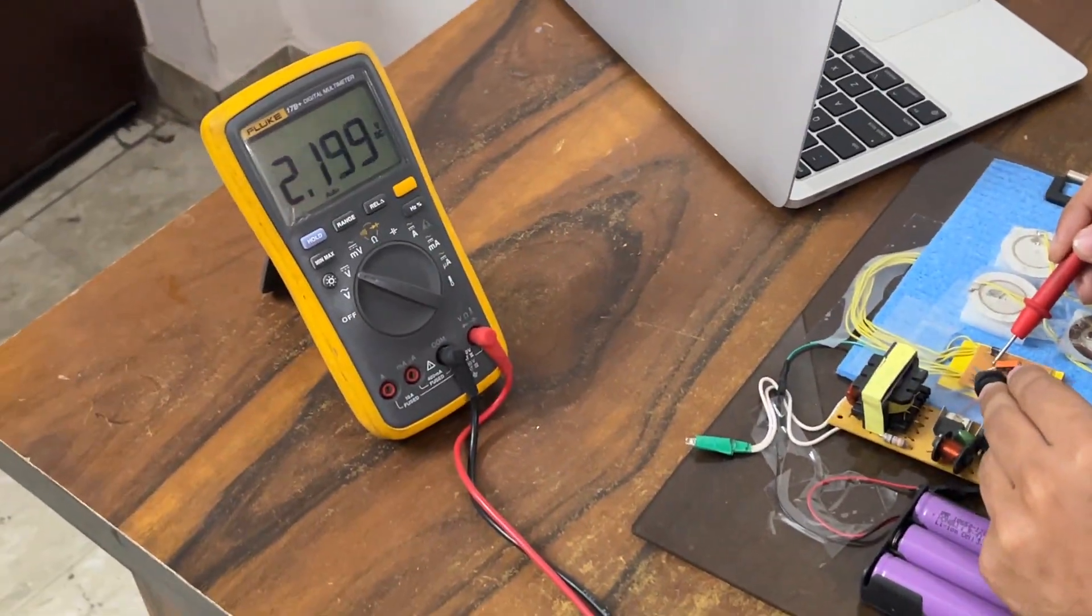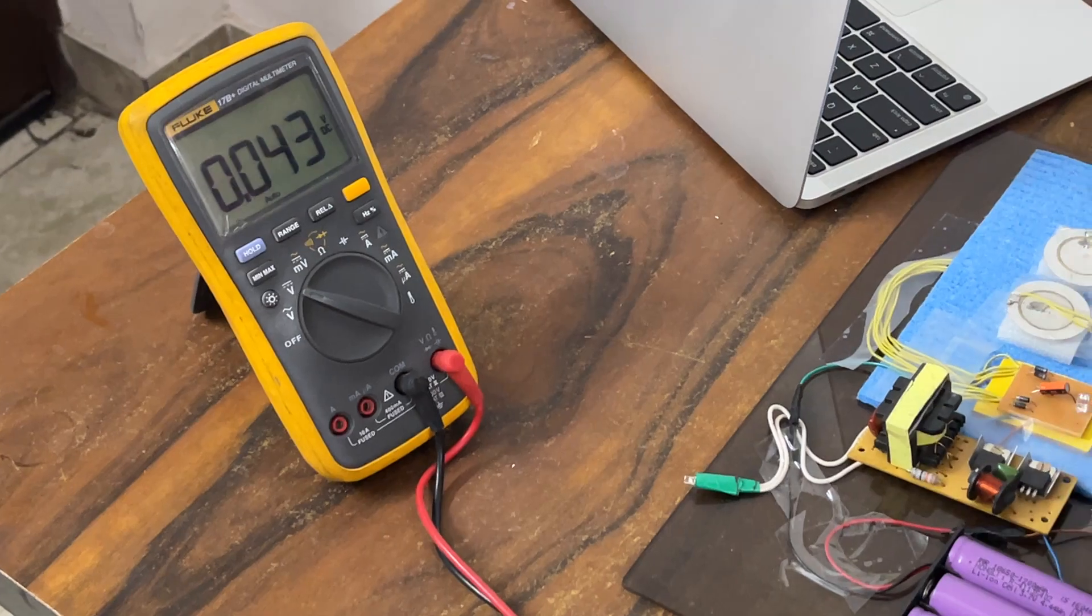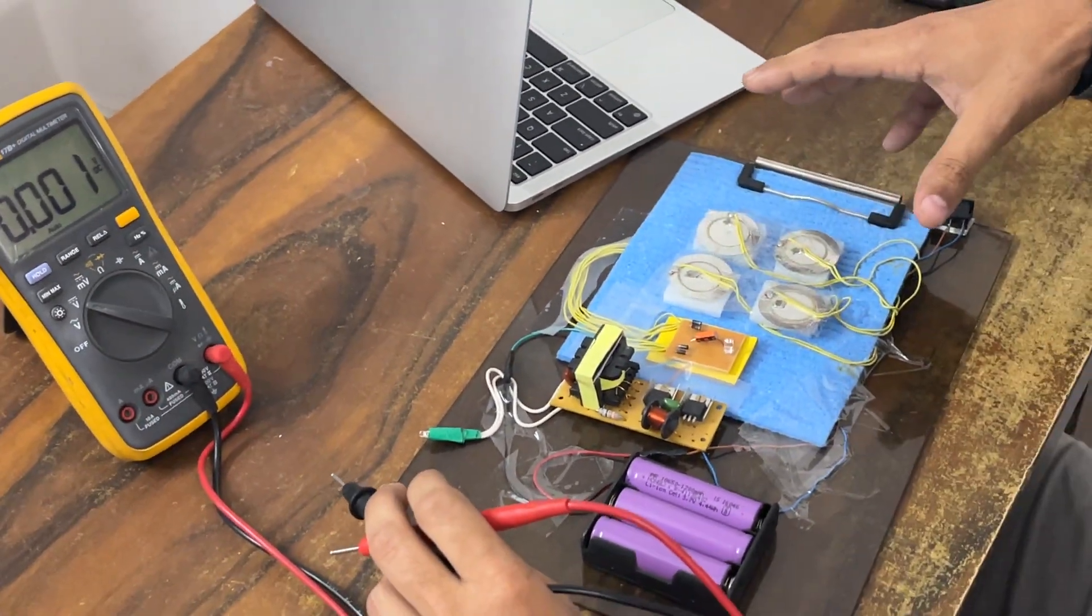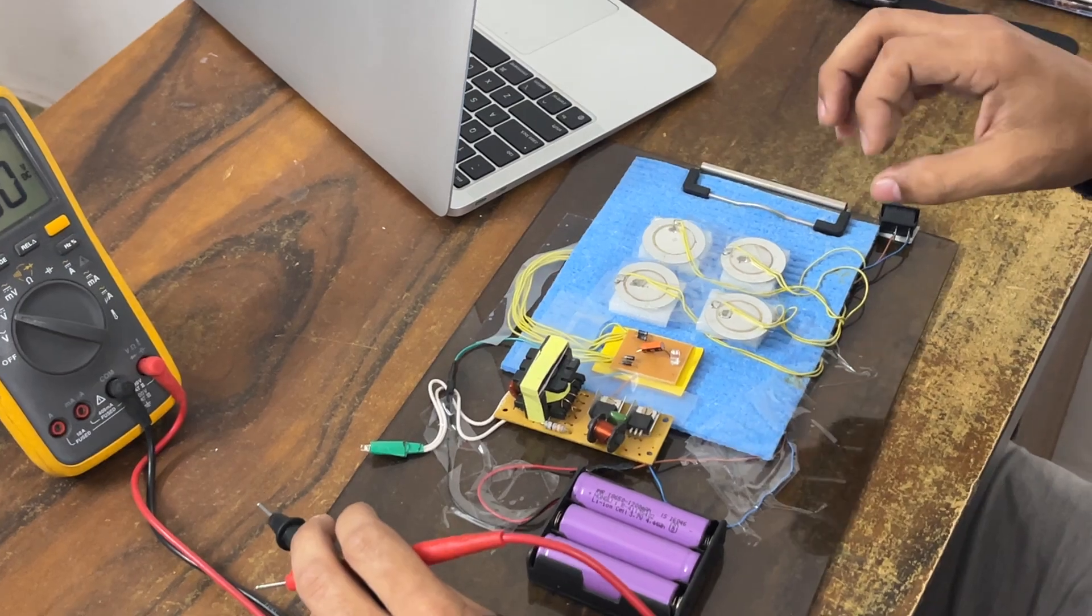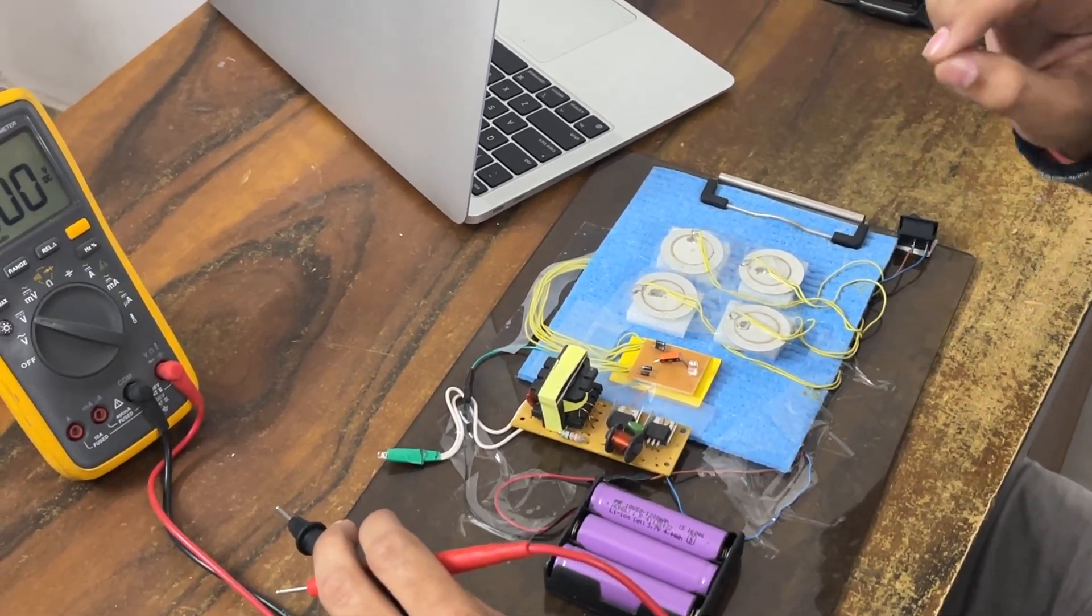You can see in the multimeter that these four piezoelectric plates generate 2 volt voltage. That means a single plate is generating 500 millivolt or 0.5 volt.